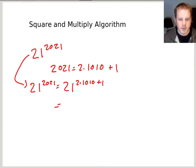And now rewrite this using the properties of exponents that we know as 21 to the 1010, take that and square it, right? So it's 2 times 1010. Then what does this plus 1 mean? Well, if you add 1 in the exponent, that's like multiplying one more time. So this is times 21.